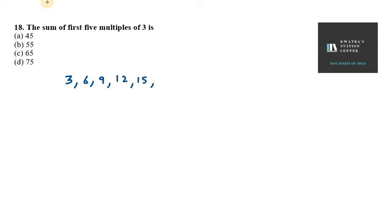And so on. But we need to just find the sum of the first 5 multiples. So it will be S5, sum of first 5 multiples means 5 numbers.